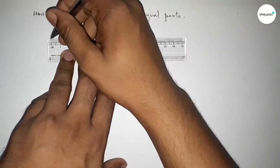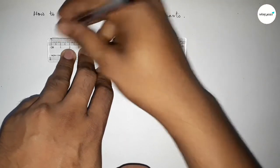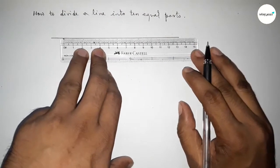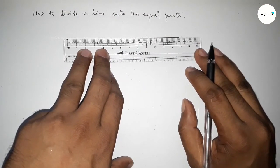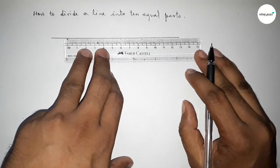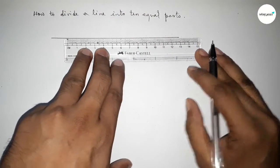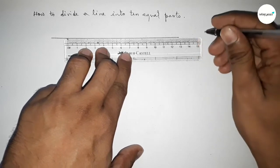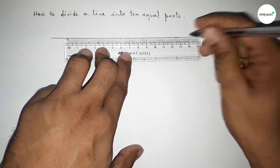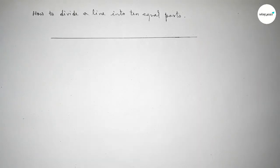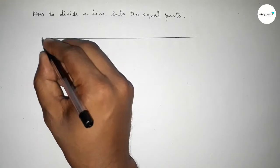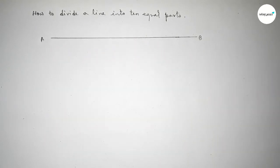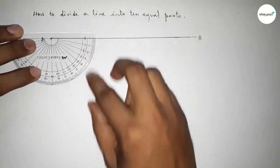First of all we have to draw a line of any length. So drawing a line here, taking point A at one end and point B at the other end.